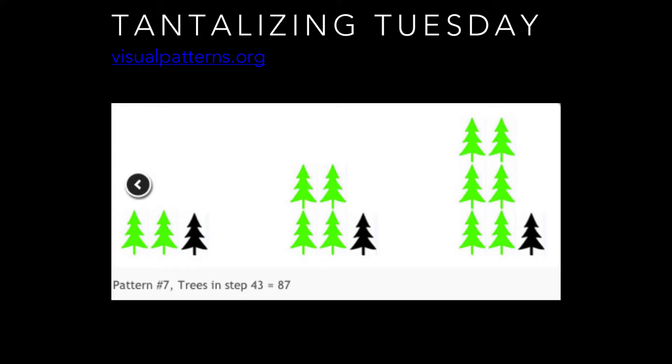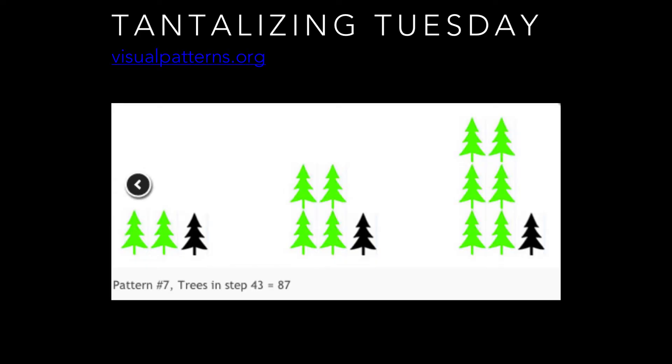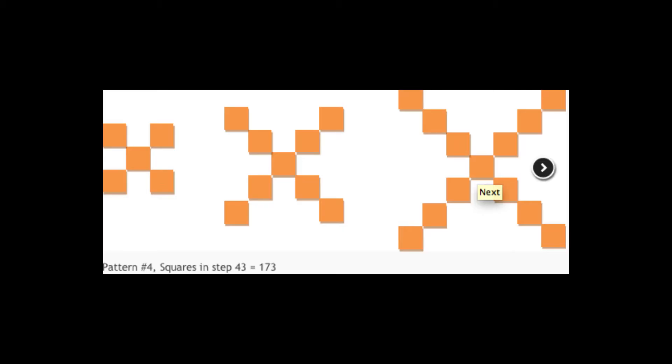On Tuesdays I do 'Tantalizing Tuesday,' and I use VisualPatterns.org. I like things that have a low floor and a high ceiling. I show a picture and say, 'Each and every one of you needs to draw the next picture — this is not art class, don't reach for the colored pencils.' Then students try to figure out what the 43rd one looks like. They do it on their own, turn to their partner, and we do a quick share. Some see it as growing by four; some see each of the four legs growing by one, and we have that dialogue about what's happening.